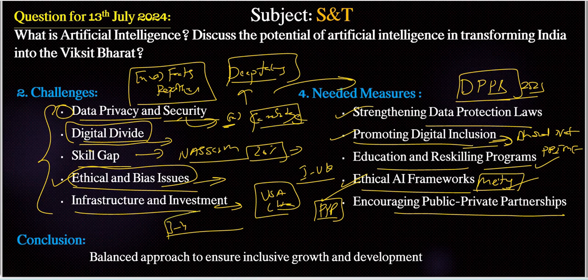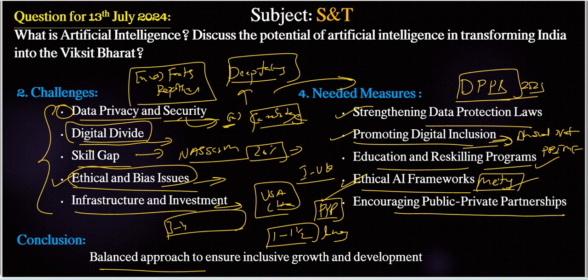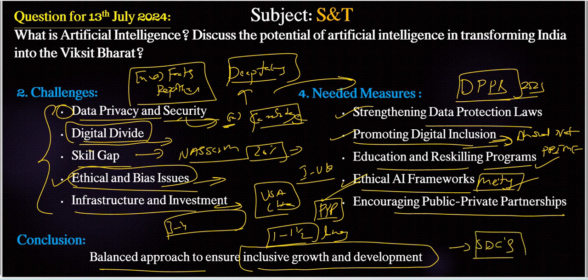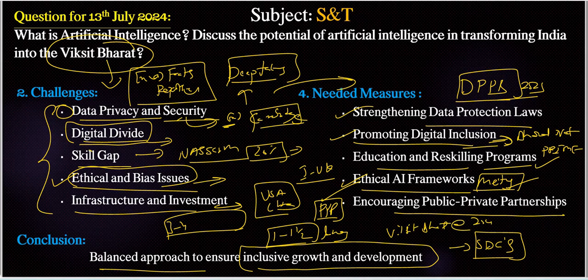Finally, we can conclude with a small note of one to one and a half lines — connecting it with the above needed measures to create a balanced approach ensuring inclusive growth and development. We can also connect it with SDGs — Sustainable Development Goals. And since the question mentions Viksit Bharat, we must mention the Viksit Bharat agenda target of 2047 in the conclusion.